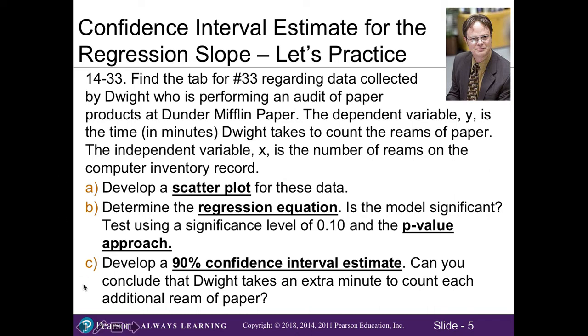The new piece is Part C, where we'll develop a 90% confidence interval estimate to describe what's going on. In this case, we want to know if Dwight takes an extra minute to count each additional ream of paper. Perhaps he takes longer, perhaps he takes less, let's see.